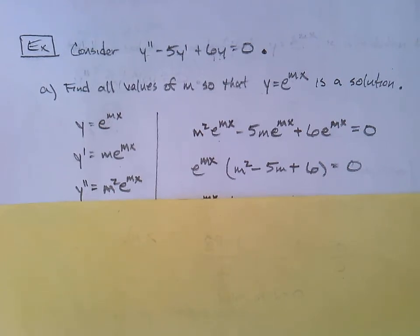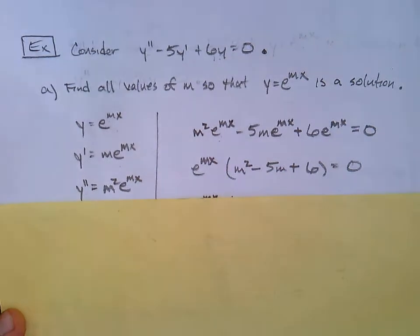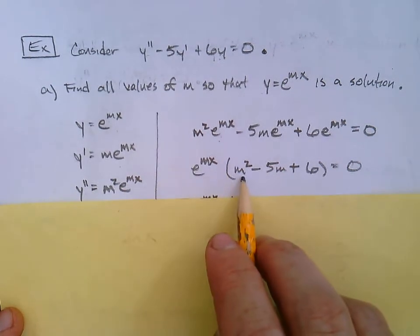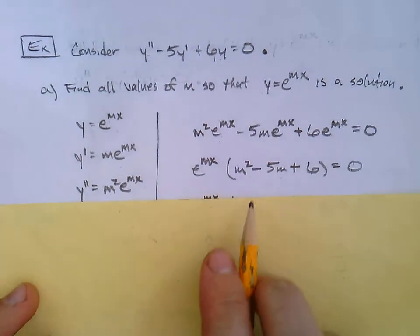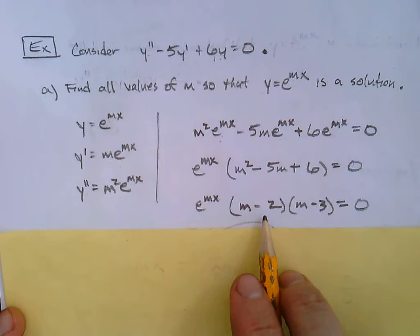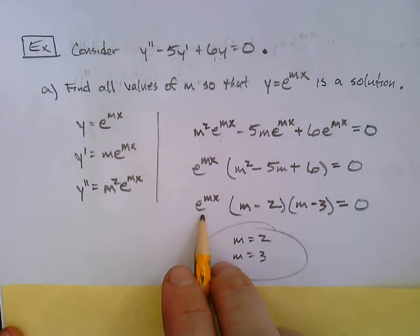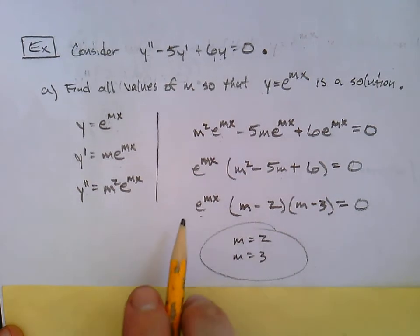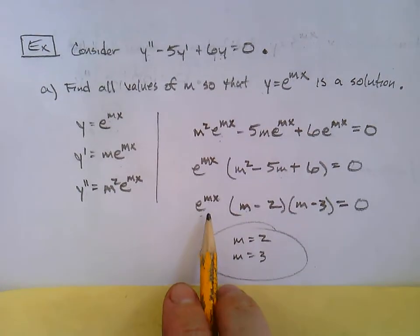We need to figure out the m that causes everything to equal zero. Notice each term has an e to the mx, so we can factor that out: e to the mx times the quantity m squared minus 5m plus 6 equals zero. We can factor further: e to the mx times (m minus 2)(m minus 3) equals zero. The e to the mx factor has no value of m that makes it zero, so only the quadratic factors give solutions: m equals 2 and m equals 3.